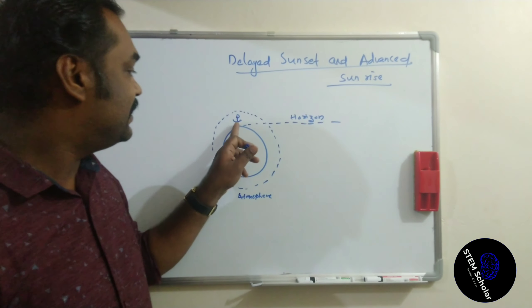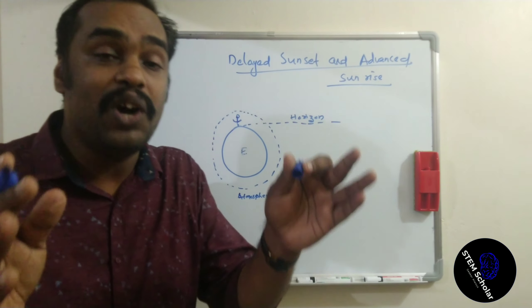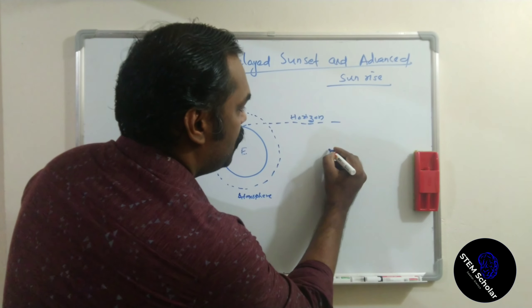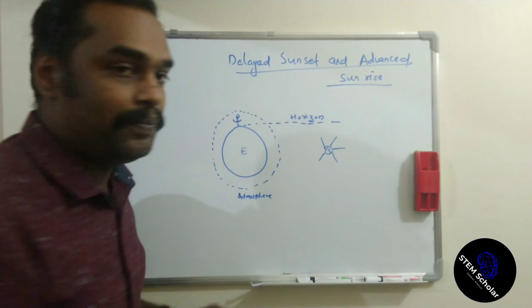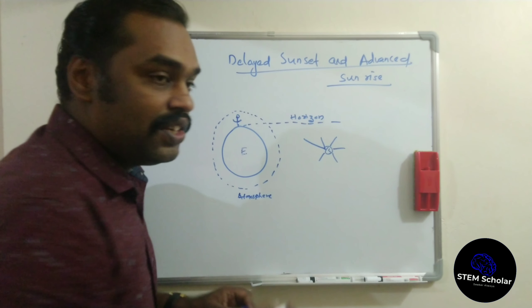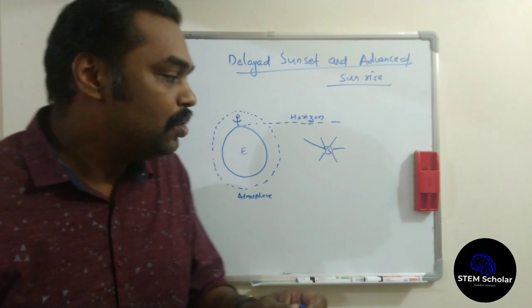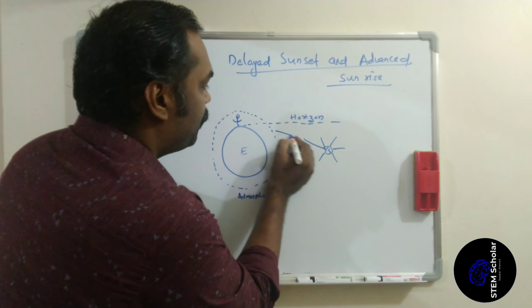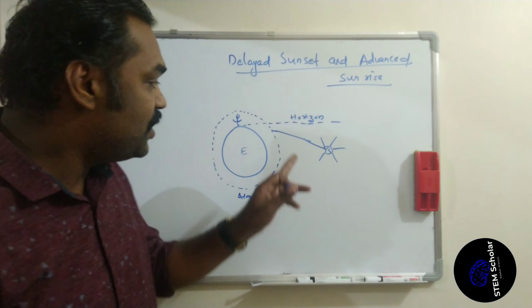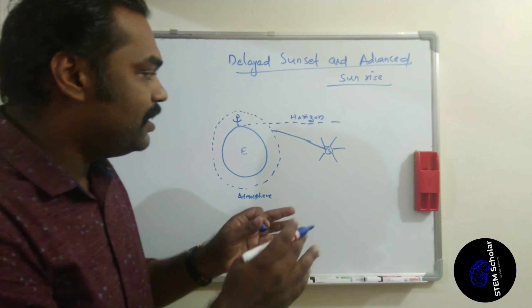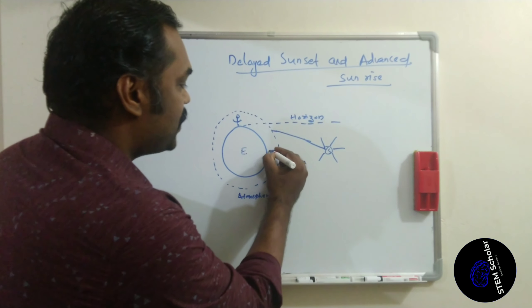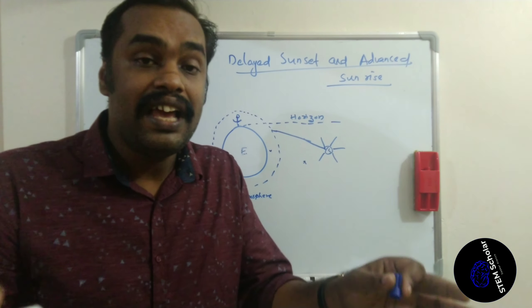We have Earth, this is the surface of Earth. From the surface of Earth, we are watching the sun. The sun is about to rise — sun is below the horizon. From the sun, the sun rays are coming and traveling through vacuum. They reach the atmosphere. Now we see that there is a difference in refractive indices between the two places — vacuum and atmosphere.